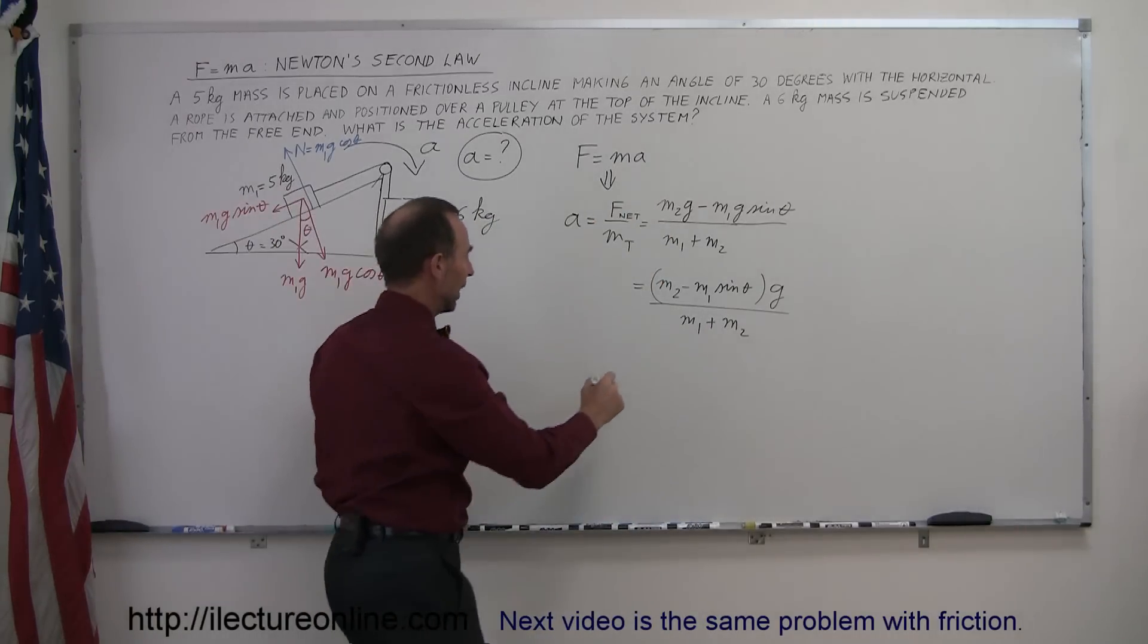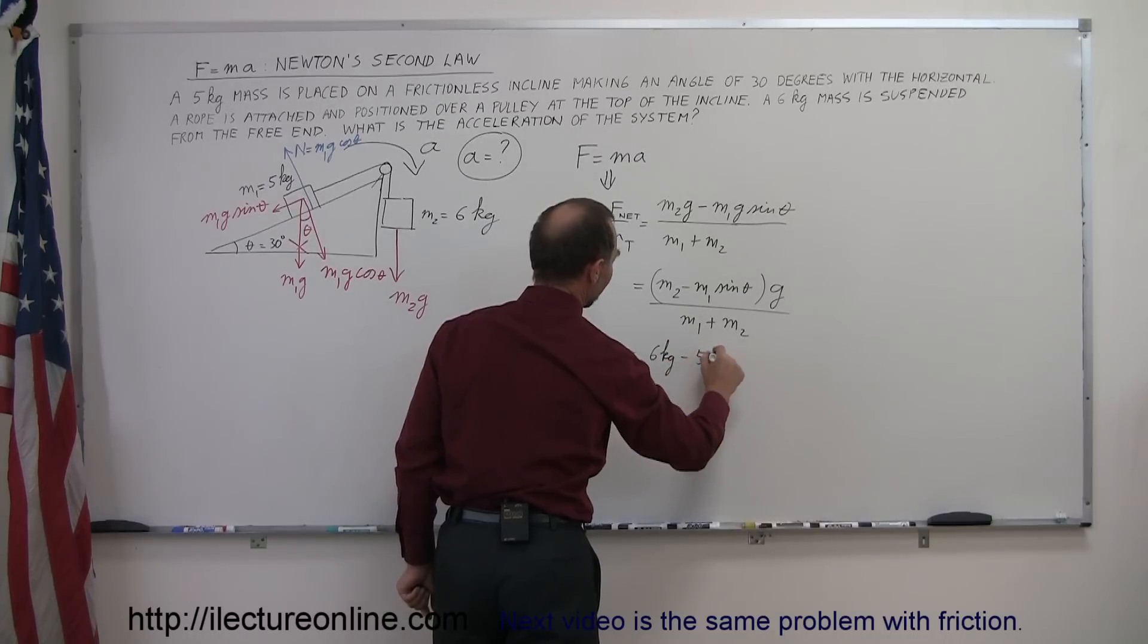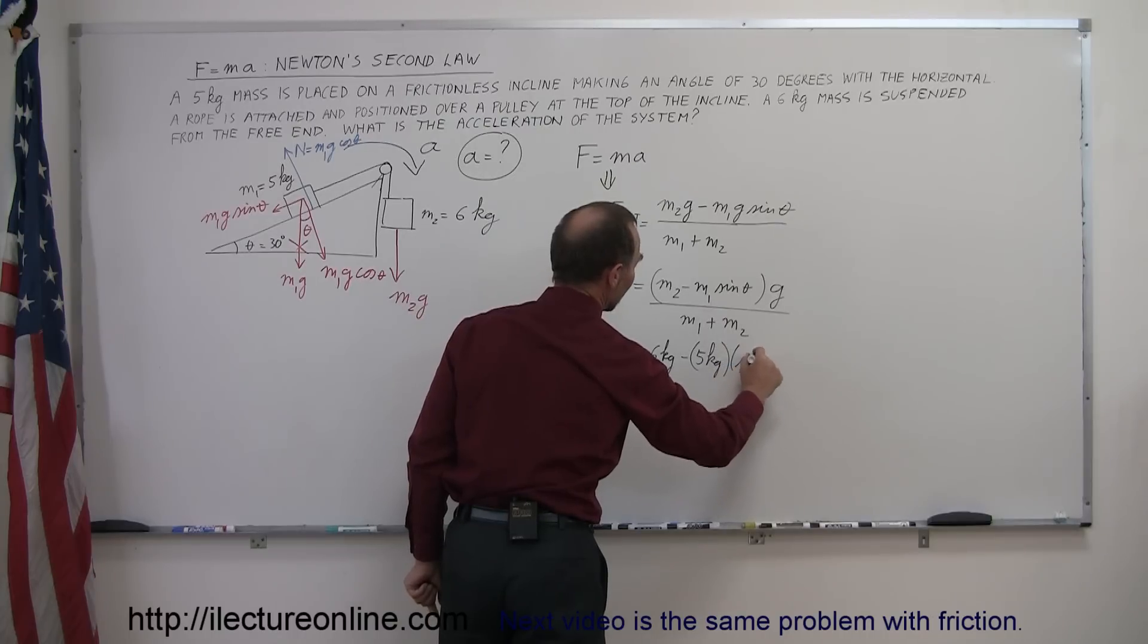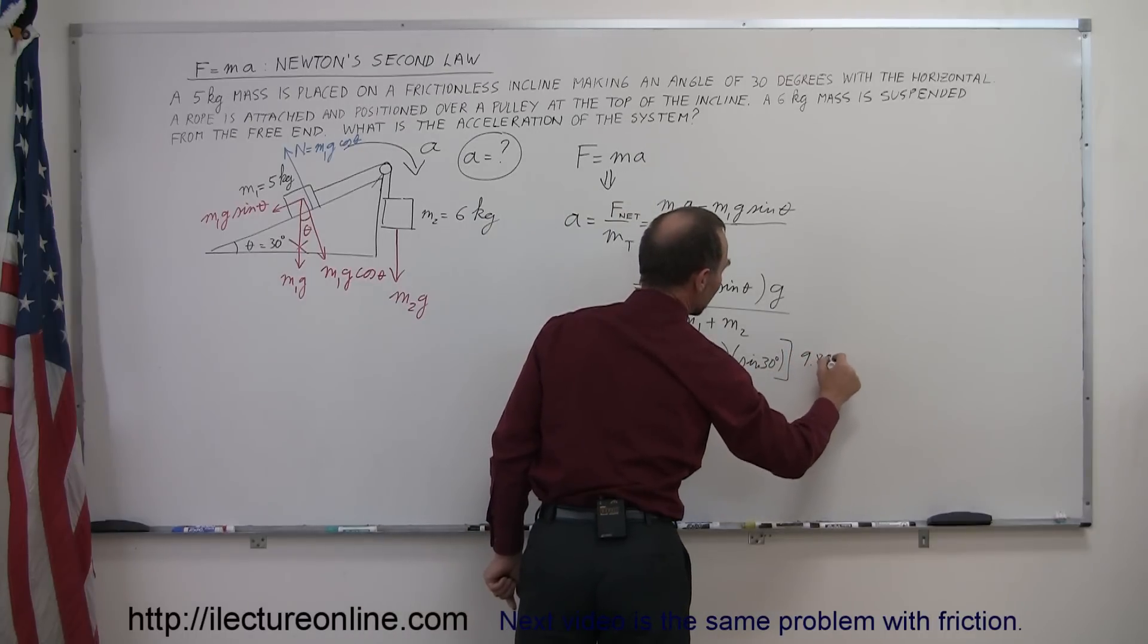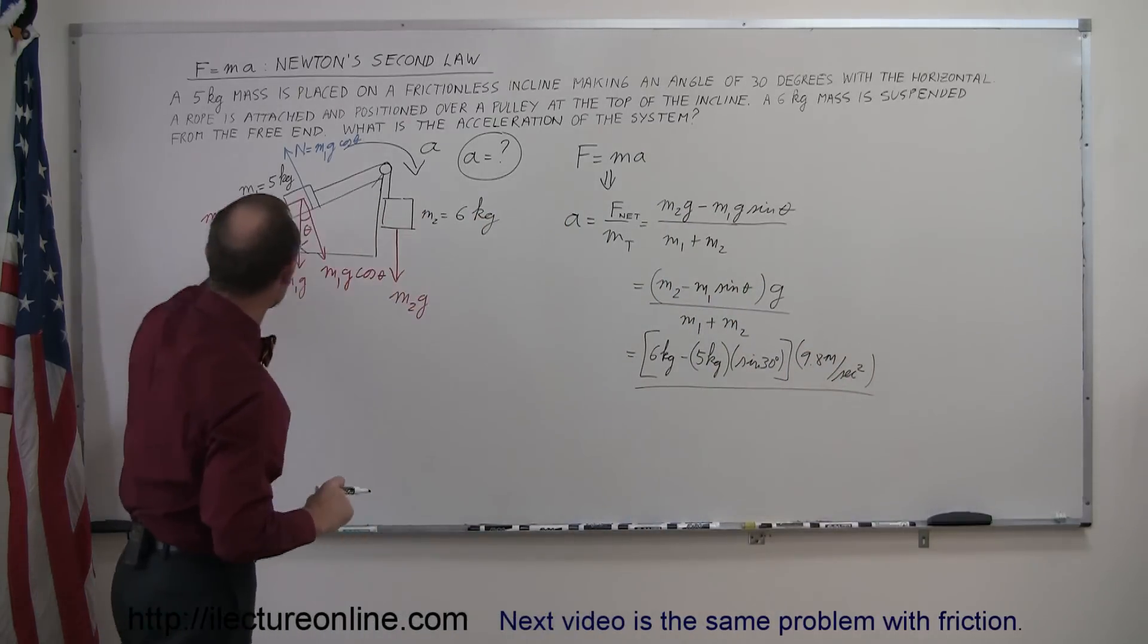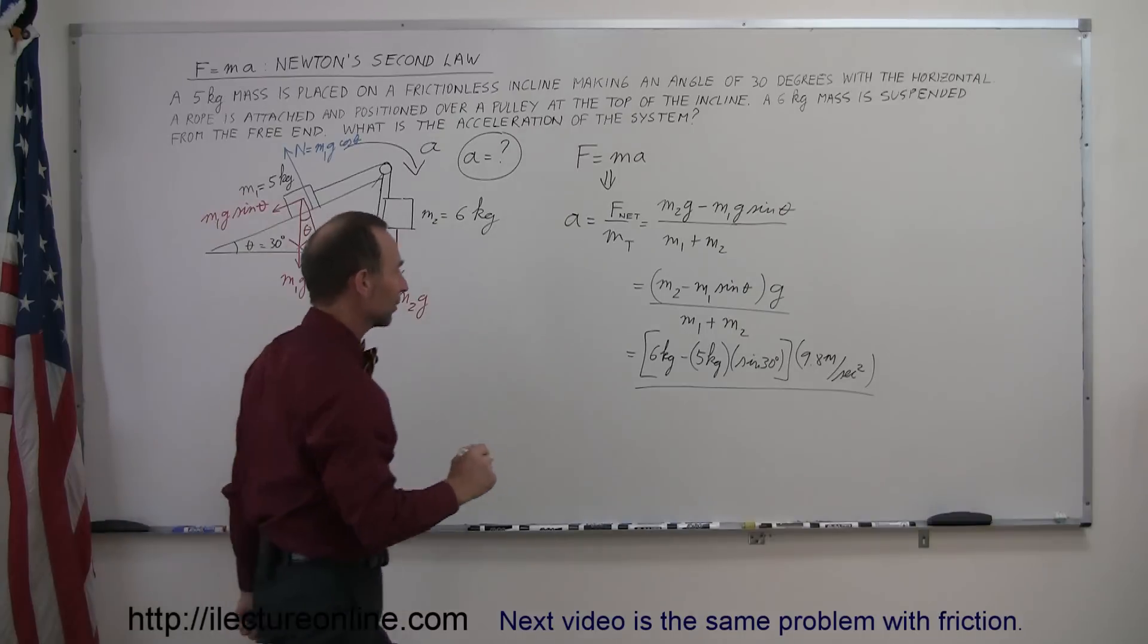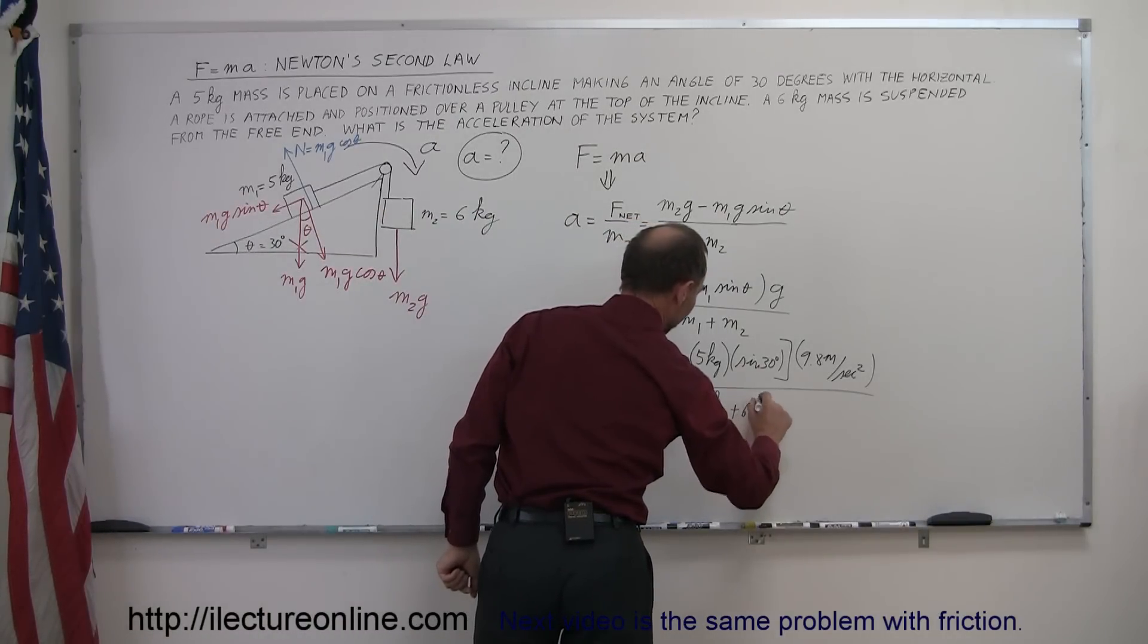Now let's plug in the numbers. m2 is 6 kilograms, m1 is 5 kilograms, we multiply that times the sine of 30 degrees, and then the whole thing in the numerator we multiply times 9.8 meters per second squared. We divide the whole thing by the sum of the two masses. We have a five kilogram and a six kilogram mass, so that's five kilograms plus six kilograms.